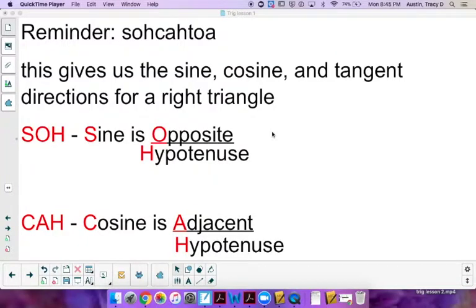So this is the second part of the second trig lesson, and we're going to start taking those special right triangles that we talked about, and we're going to actually start applying sine, cosine, and tangent to them.